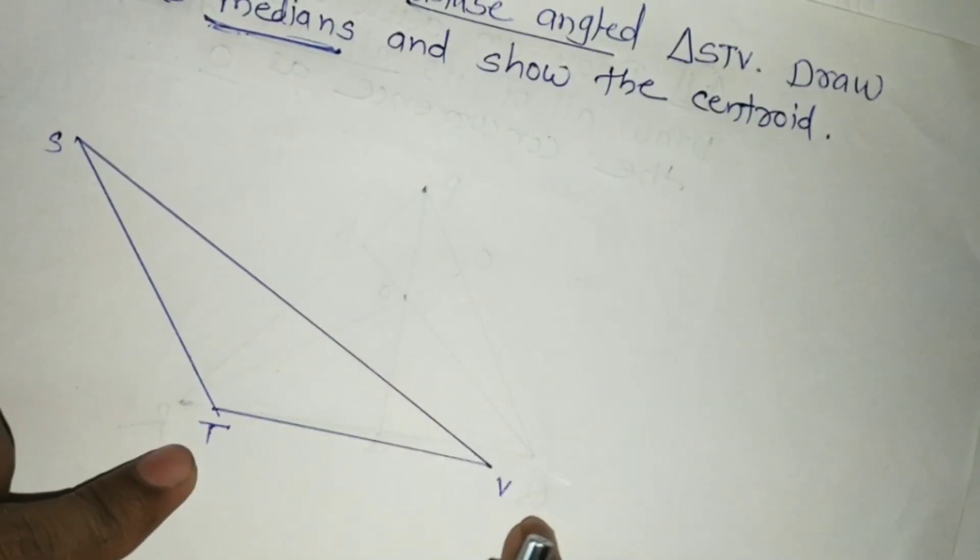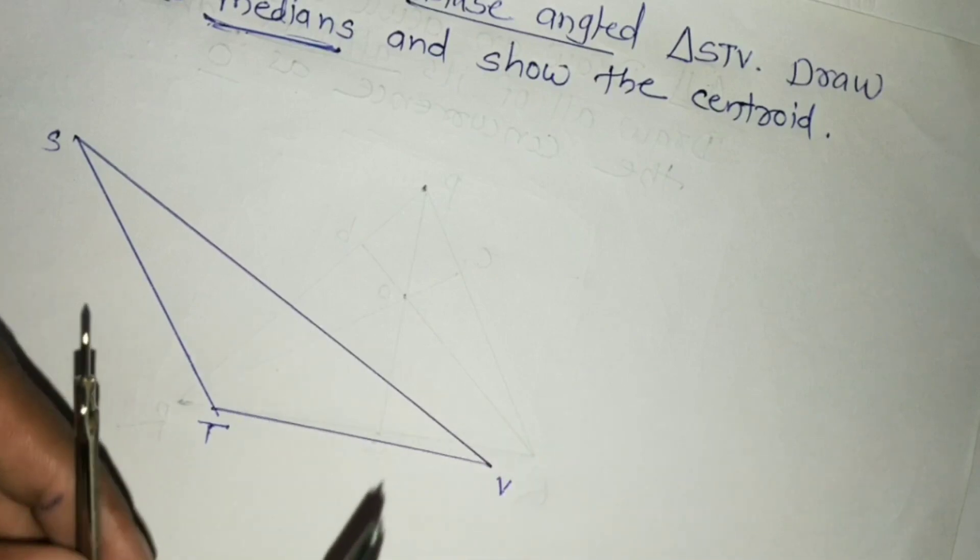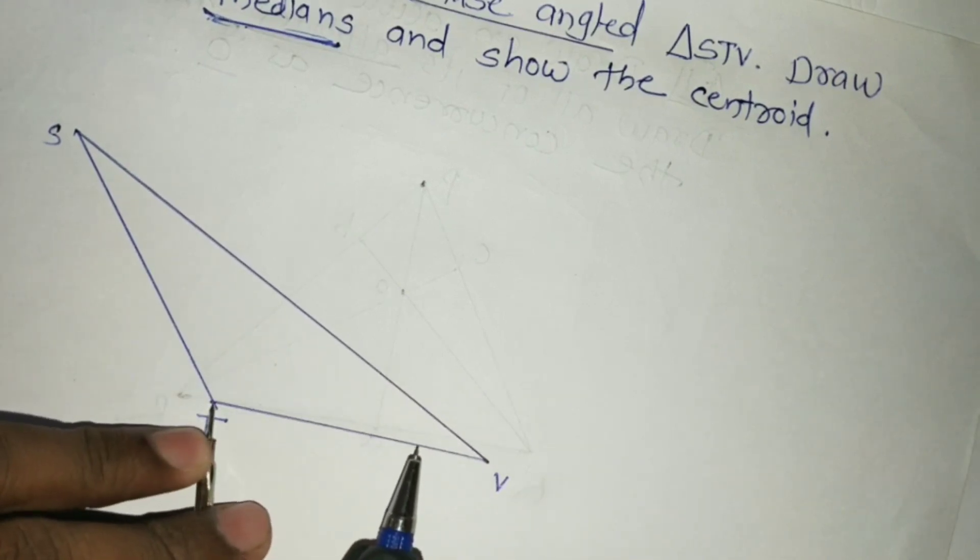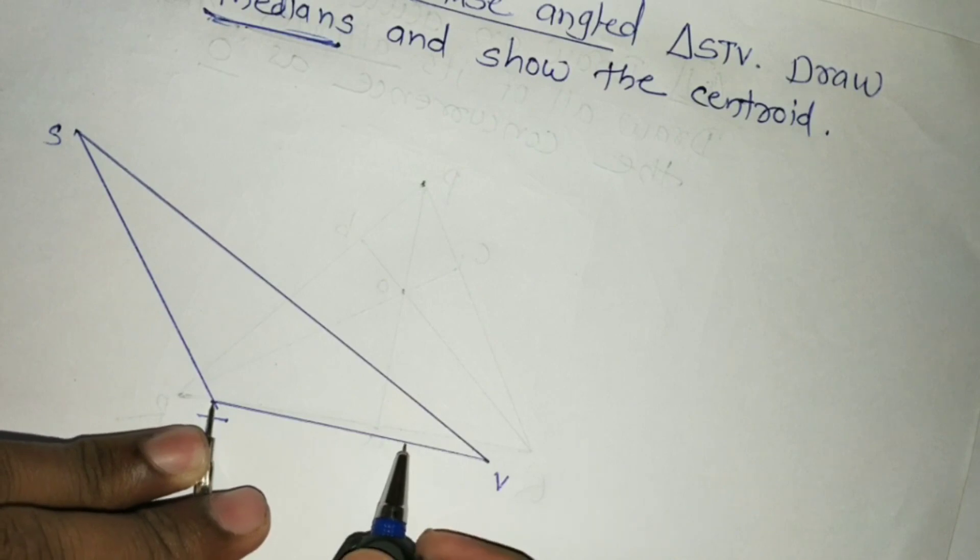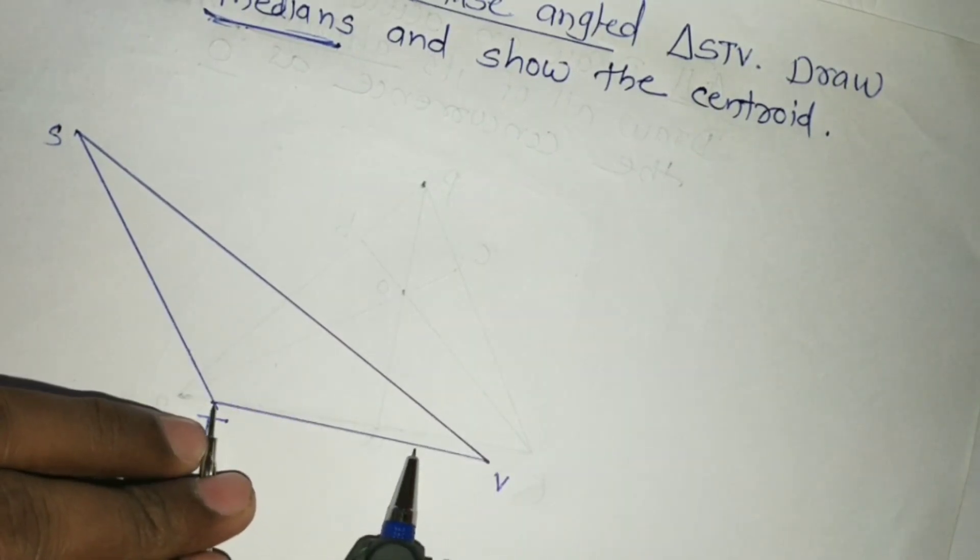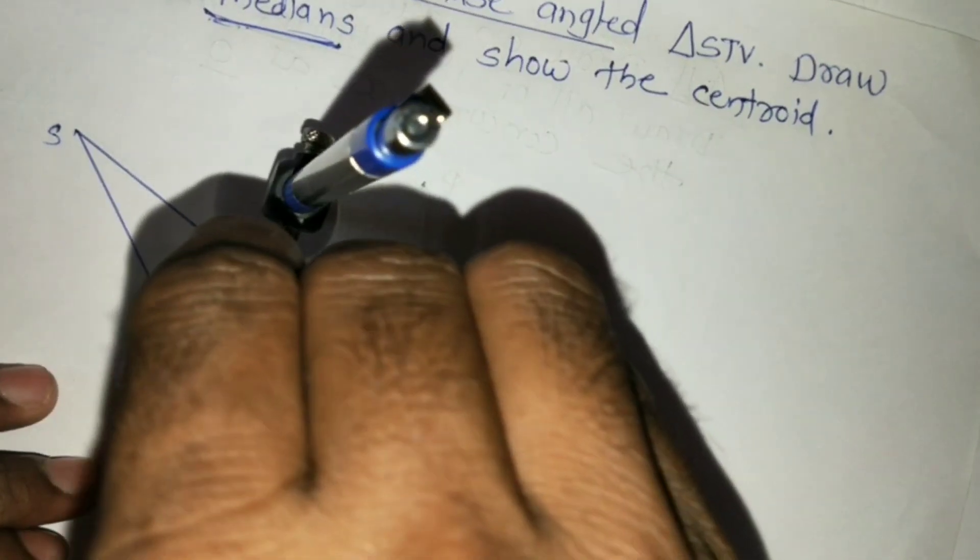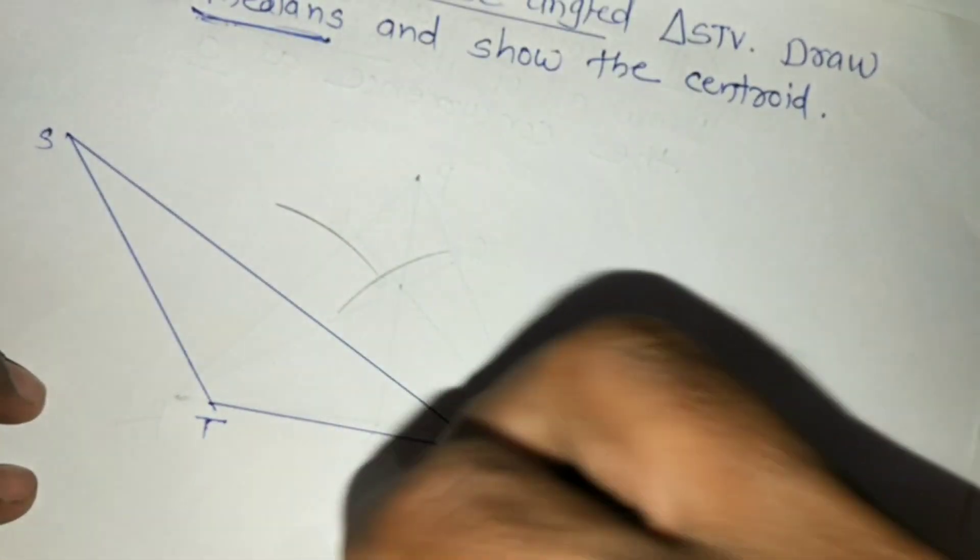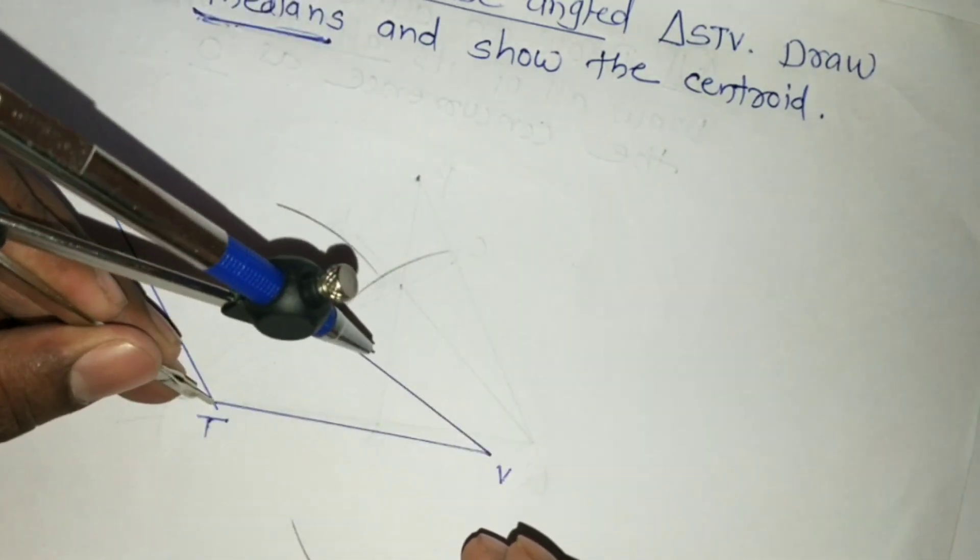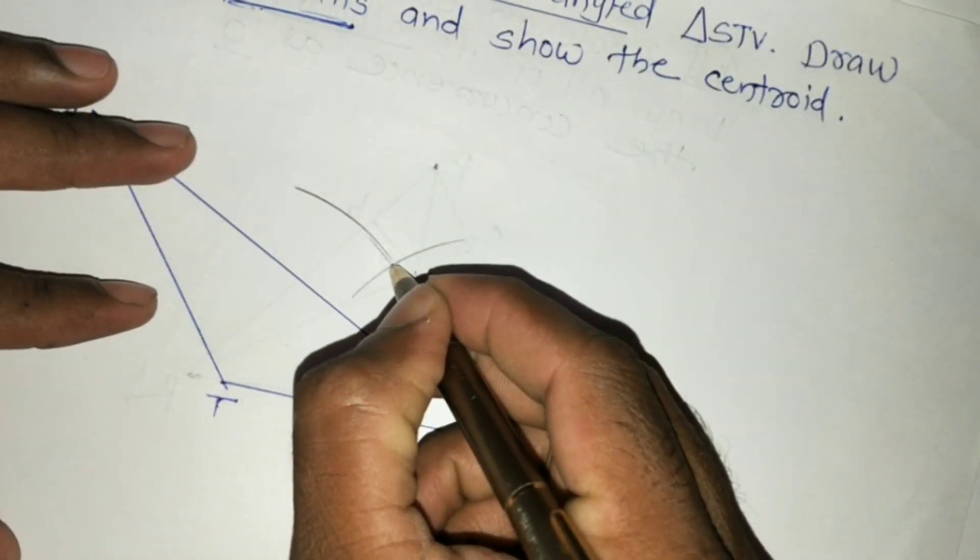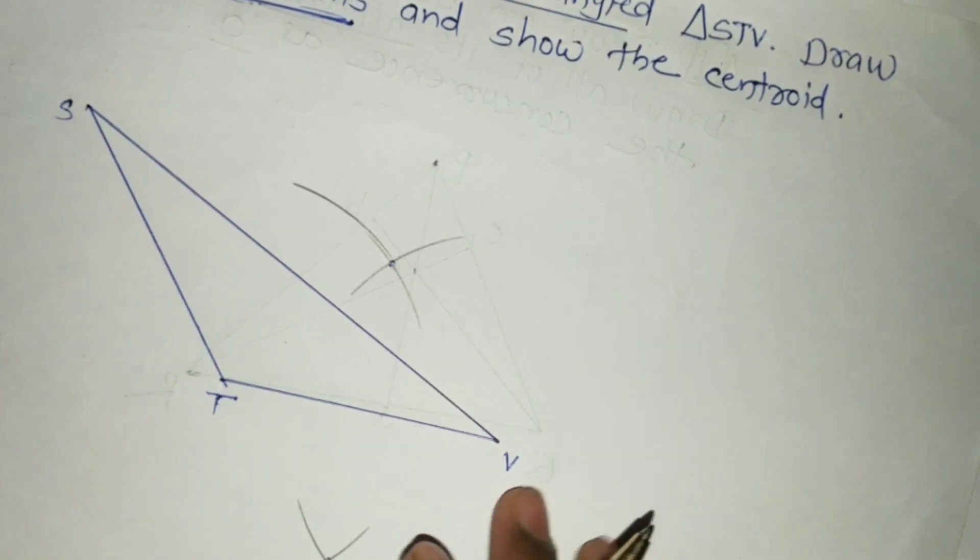Take a compass. Take a measurement with this compass greater than the midpoint distance and draw an arc, and this one point. So we got these two points. Now join these two points.